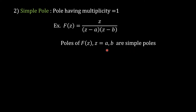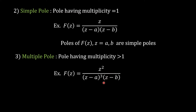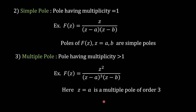Poles having multiplicity equal to 1 are simple poles. Next is multiple poles — poles having multiplicity strictly greater than 1. For example, if we consider F(Z) equal to Z squared divided by (Z minus A) cubed into (Z minus B), clearly A and B are poles of F(Z). But if we look at pole A, its corresponding linear factor (Z minus A) appears three times in the denominator, so its multiplicity is 3, and therefore Z equal to A is a pole of order 3. Whereas Z equal to B is a pole of order 1, hence it is called a simple pole.